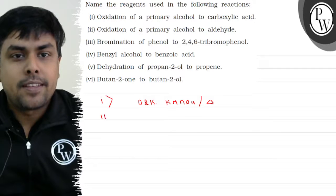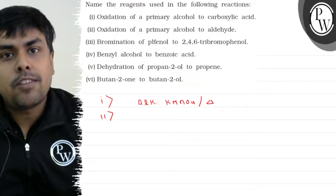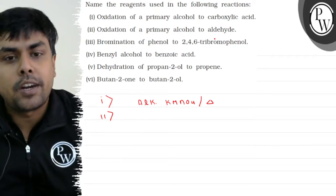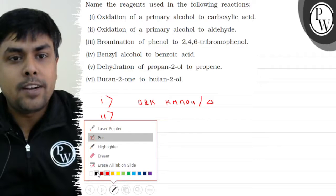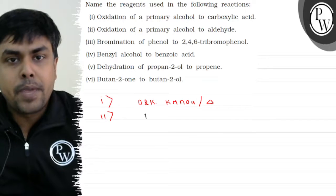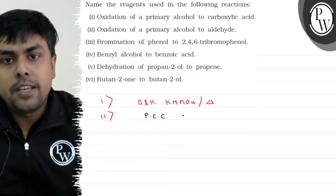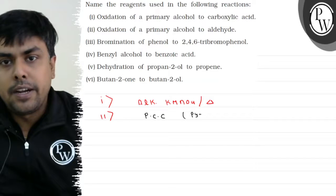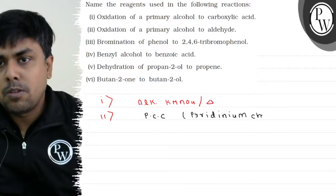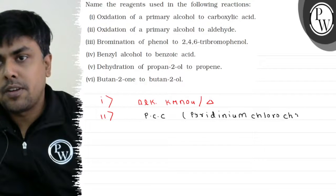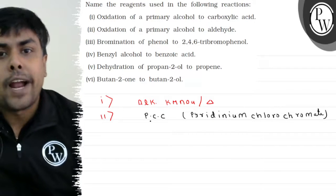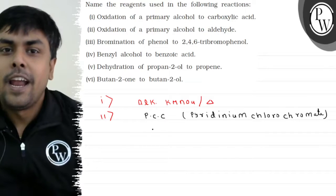Next, part 2: Oxidation of primary alcohol to aldehyde. Now, I have primary alcohol to aldehyde. I will use a mild oxidizer. So mild oxidizer, which is best, that is PCC - Pyridinium chlorochromate. This is a mild oxidizer, which converts primary alcohol to aldehyde.